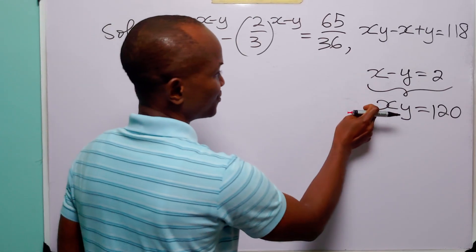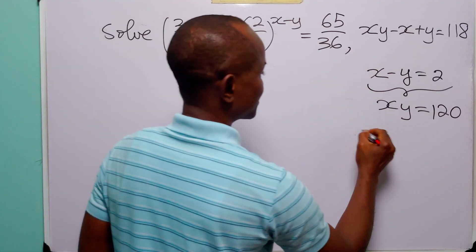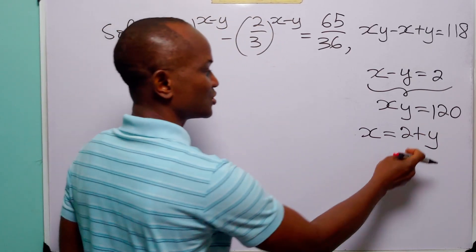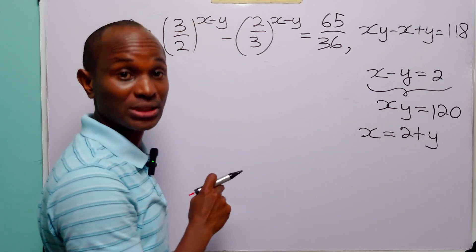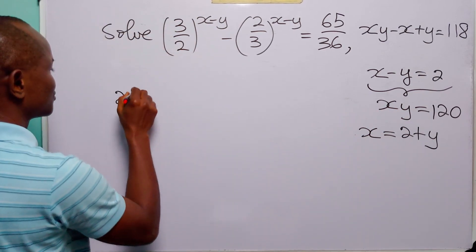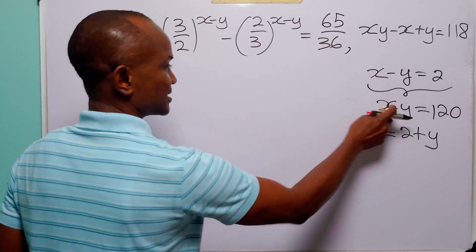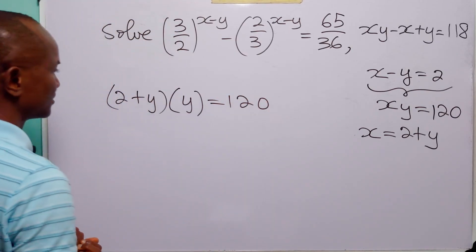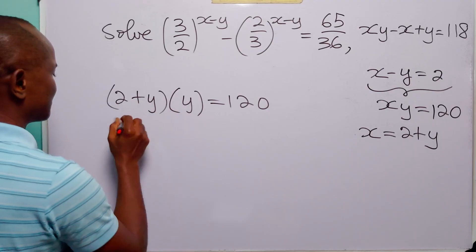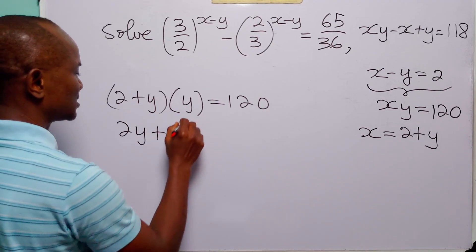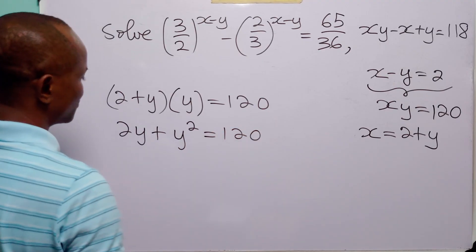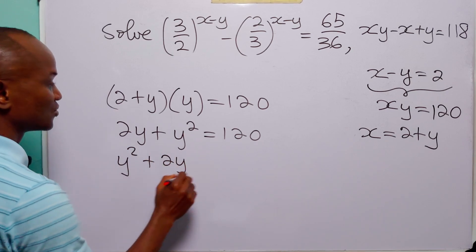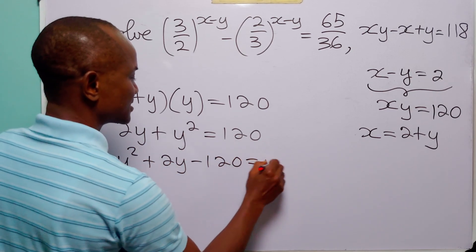So now we have reduced this original system into two simpler simultaneous equations. To solve these, let us start with the first: from x minus y equals 2, we have x equals 2 plus y. Now we substitute 2 plus y for x in the second equation xy equals 120. When we do that, we have 2 plus y multiplied by y equals 120. Opening the bracket, we have 2y plus y squared equals 120. Rearranging, we get y squared plus 2y minus 120 equals 0.